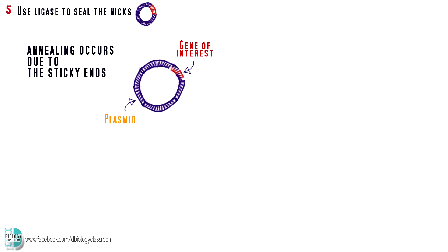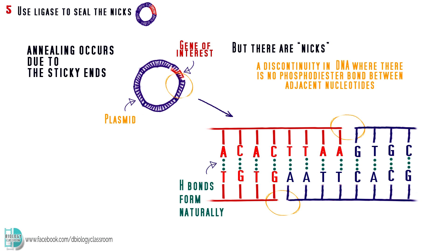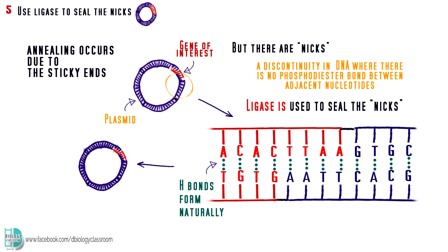When you incubate the restriction fragments together, annealing occurs due to the sticky ends. However, there are nicks between the fragments. Nicks are the gaps at the sugar phosphate backbone. The DNA pieces only form hydrogen bonds with each other. But they did not form the phosphodiester bond yet. An enzyme called ligase is used to seal the nicks. When the sugar phosphate backbone is complete, recombinant DNA or rDNA is produced. We call it recombinant DNA because it contains DNA from different sources.